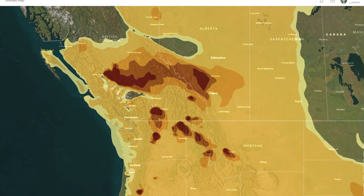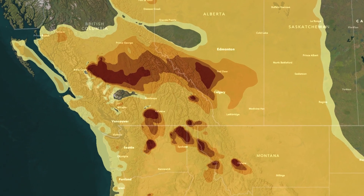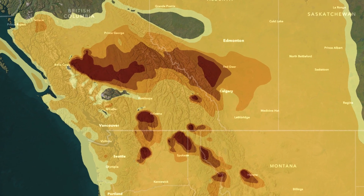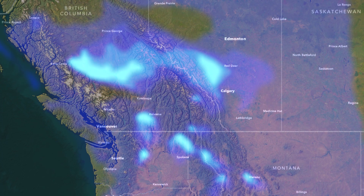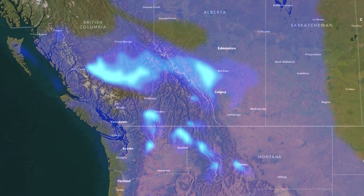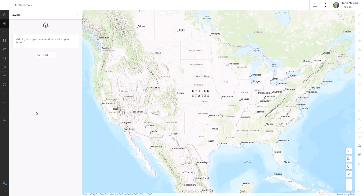I'm going to show you how to make discrete vector polygons that represent a continuous ephemeral phenomenon look continuous and ephemeral. We'll use effects in ArcGIS Online to do it.